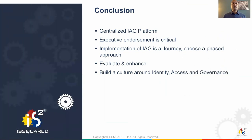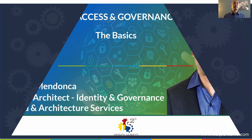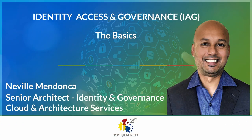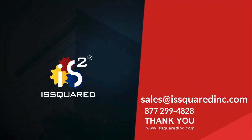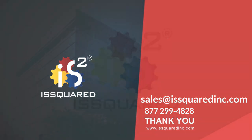Conclusion. It is important to have a centralized IAG platform. A strong endorsement from key executives is important for this to be successful. Choose a phased approach and prioritize the business-critical applications that will give more ROI over others. Periodically review and update your processes — constant improvement will allow your IAM program to mature as your organization and the industry matures. Build a strong culture within your organization around identity, access, and governance by conducting internal workshops and trainings. Thank you for joining IS Squared's web series. For more videos, training, and information, don't forget to subscribe to our YouTube channel and visit our website at ISSquared.com.